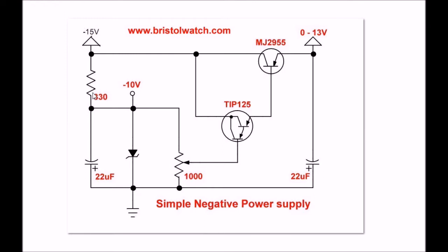What we have is a 330 ohm resistor in series with a 10 volt zener. Note the polarity of the zener that the anode side of the zener goes back towards the negative power supply, also note the polarity of these two bypass capacitors.